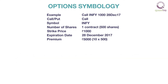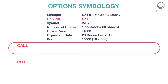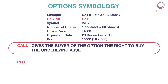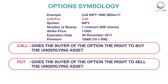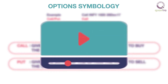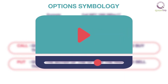Let us understand each term one by one. Call or put specifies the type of an option. When someone buys or sells an option, it can be either a call or a put option. A call option gives the buyer the right to buy the underlying asset, whereas a put option gives the buyer the right to sell the underlying asset. In the next video, we will discuss call and put options in detail.